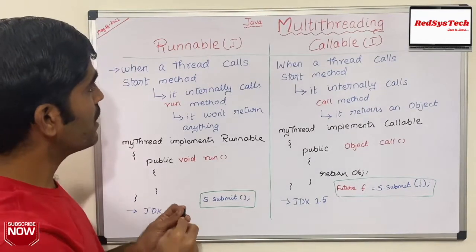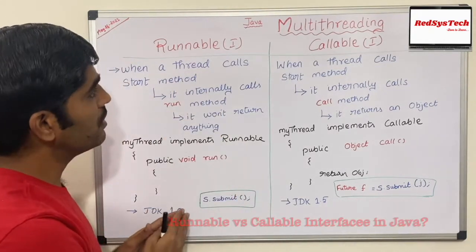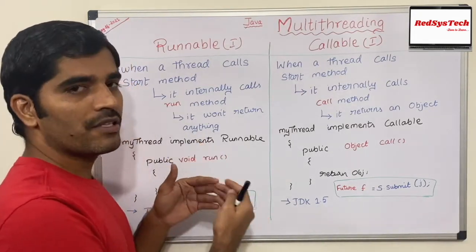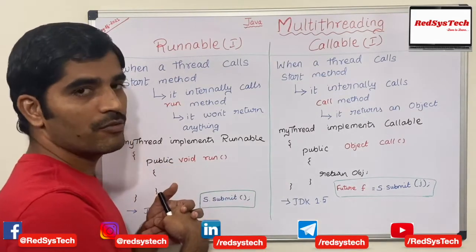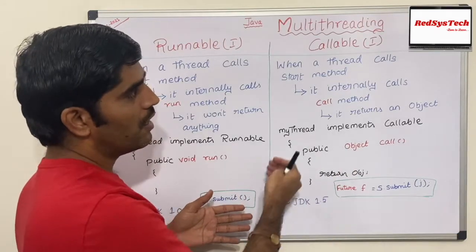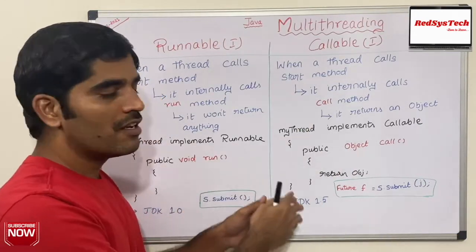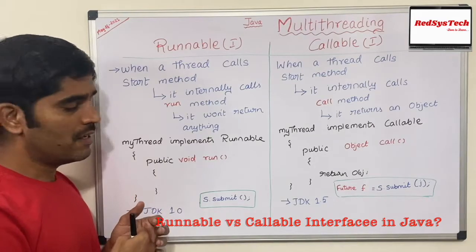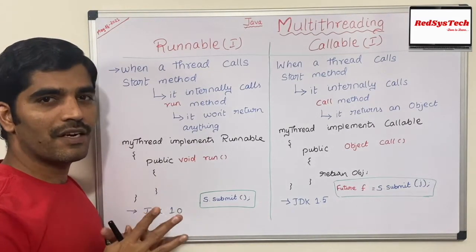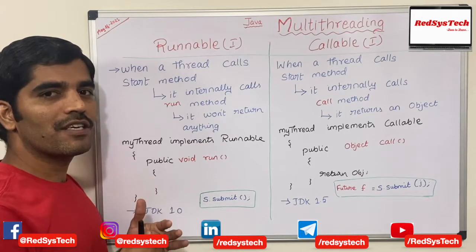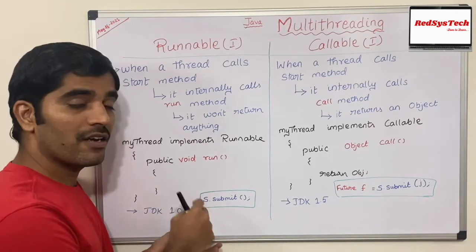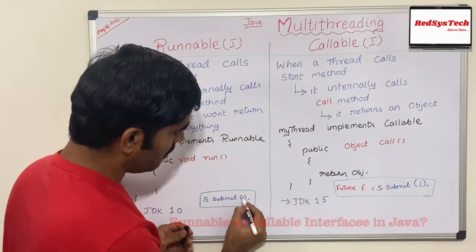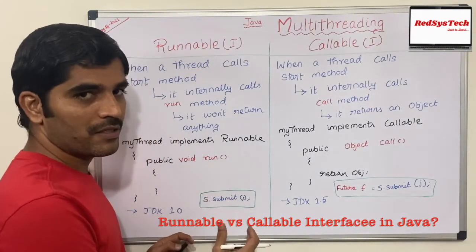Runnable was introduced in JDK 1.0. Later, the Oracle development team realized that if the main thread wants to get the object returned from a job of a thread, they needed a new interface — so Callable was introduced in JDK 1.5. To receive that returned object, you use ExecutorService. Once you get an ExecutorService object, you submit a job: s.submit(j), where j is the job and s is the ExecutorService.